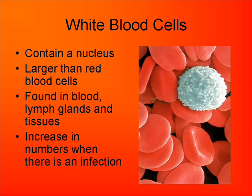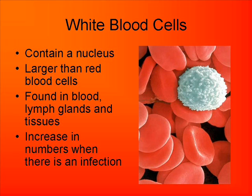White blood cells, also known as leukocytes, are also a component of your blood. Looking at the picture, they're a little bit larger than red blood cells — the diameter might not be too different, but they're more spherical in shape as opposed to that flat donut shape. They do contain a nucleus. They're found in your blood, lymph glands, and tissues, and it's your lymph nodes where white blood cells are produced to fight infection. Their numbers increase when you have some sort of infection or disease.